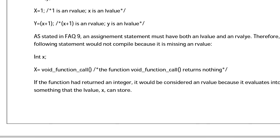Suppose: int x; x = void_function_call(). The function void_function_call() returns nothing, so there is no integer associated with it, whereas x is an integer.